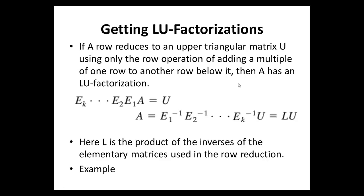How do we get these LU Factorizations? If the n by n matrix A can be row reduced to an upper triangular matrix U, using only the row operation of adding a multiple of one row to another row below it, then A has an LU Factorization.